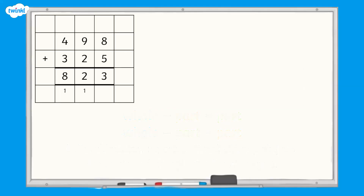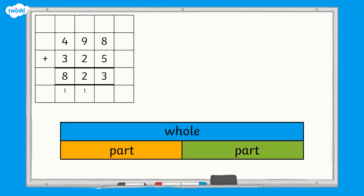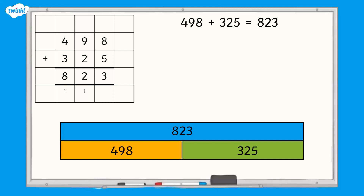Let's put our addition into a bar model. The whole is the total amount, so it is 823. The parts are the numbers we added together, so one part is 498 and the other part is 325. Now we can use the bar model to help us identify the inverse of our calculation. The calculation was 498 add 325 equals 823, so the inverse will be a subtraction calculation.